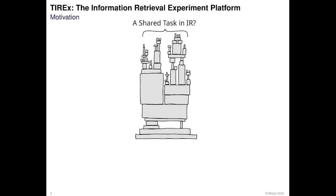The motivation of this experiment platform TREX is that if we do experiments and research in information retrieval, we want them to be very robust in the sense that the results and knowledge we extract from our experiments are correct. And often our research in IR is driven by shared tasks, so we also want that our shared tasks are robust in the sense that the knowledge and results we gain from them are very robust.